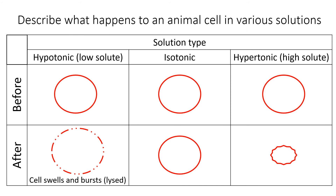In an isotonic solution, the two concentrations are equal, so there's no net change — water molecules still move, but there's no overall difference, hence the term 'net'. In a hypertonic solution, which is the opposite of hypotonic, there are lots of solute molecules — so we have a low water concentration outside, whereas inside the cell we have a dilute solution with a high water concentration. Water will move out of the cell and that will cause the cell to shrivel.